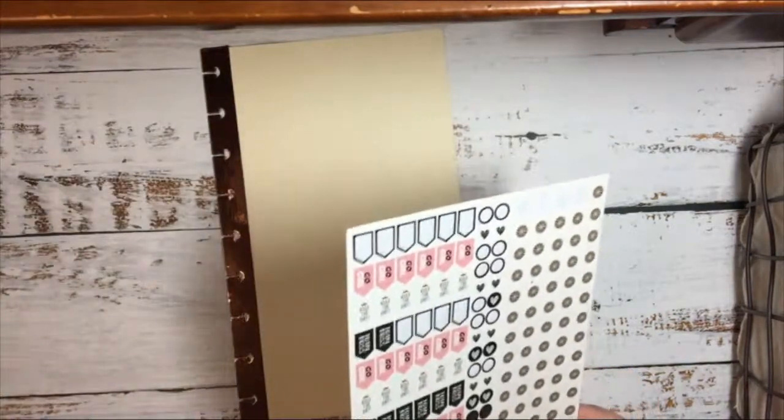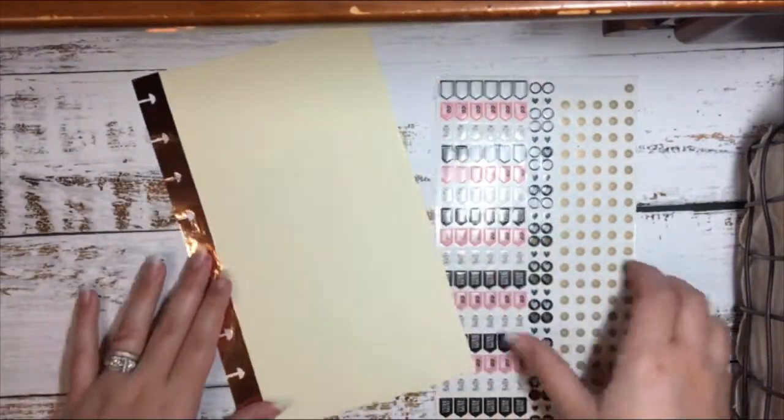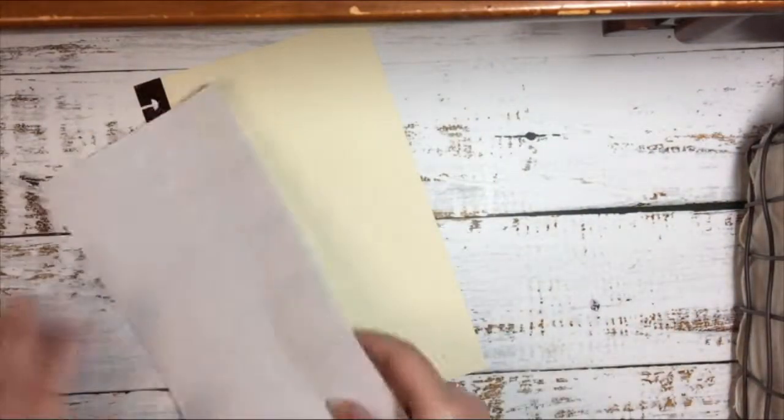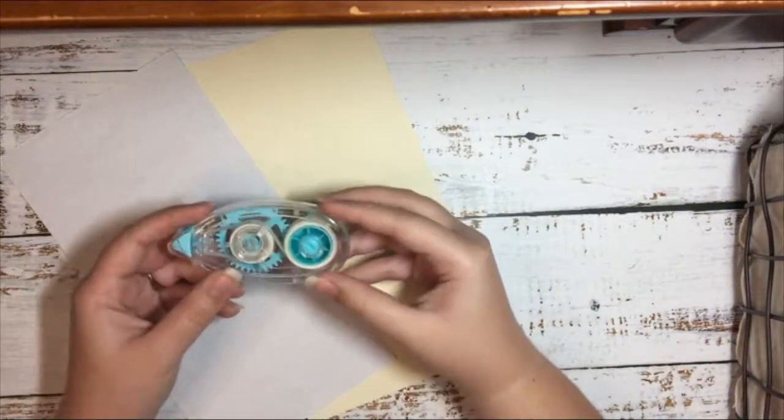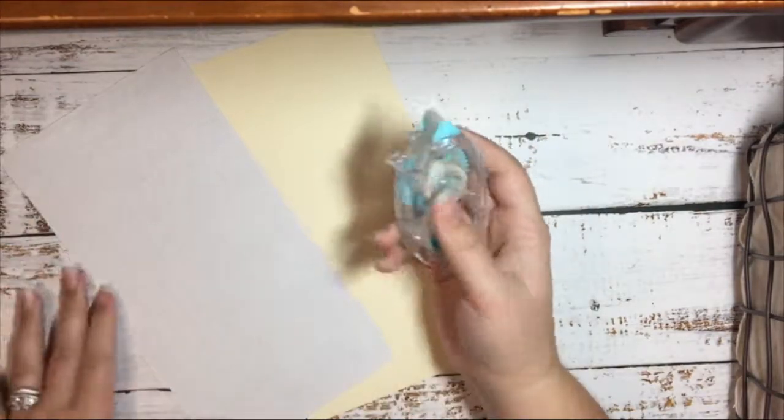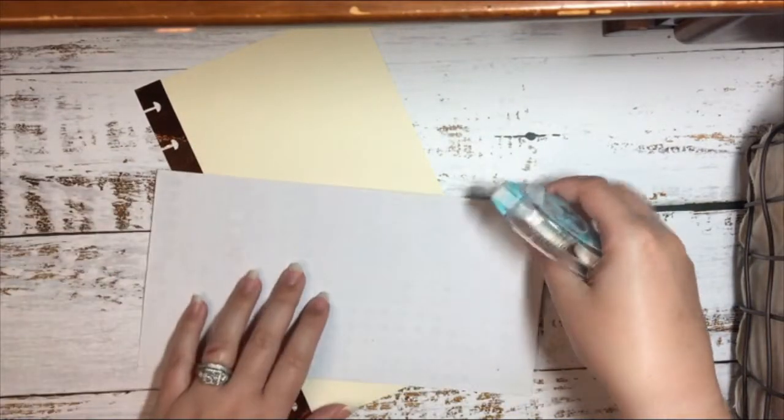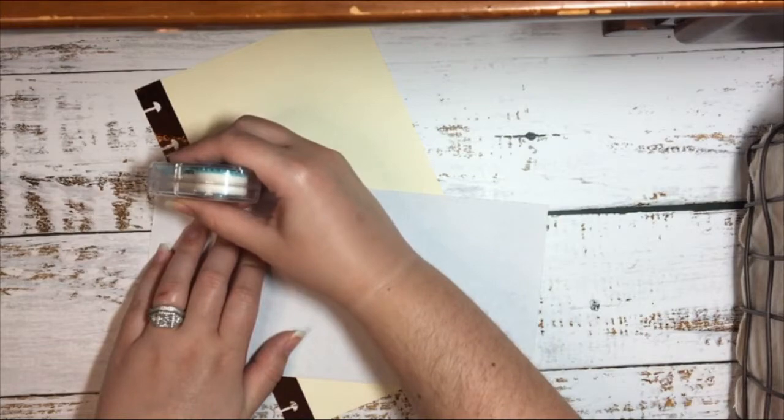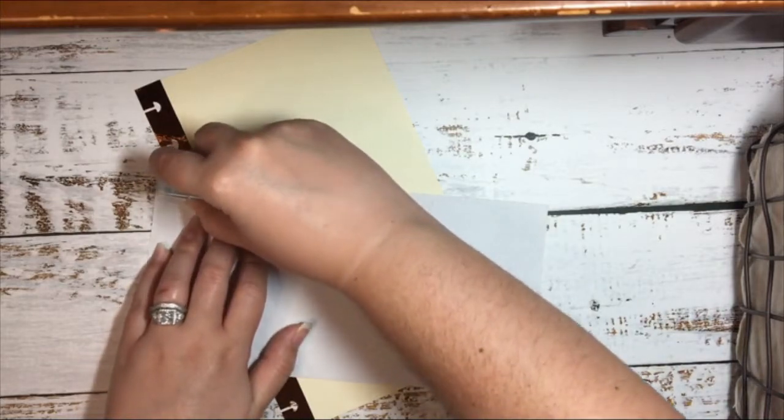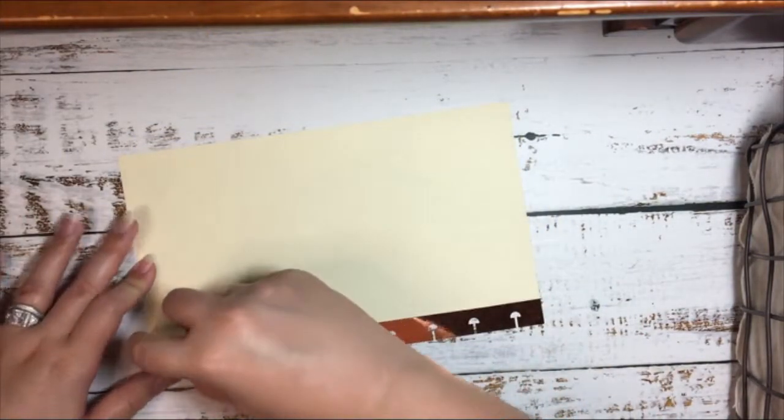Now that I have everything punched, I'm going to grab my sticker sheets. I'm going to do it one at a time. I only need one of these cardstock pieces and I'm going to take this tape runner and tape along the edges. Maybe not on the sticker page, I'm going to tape along this edge right here.